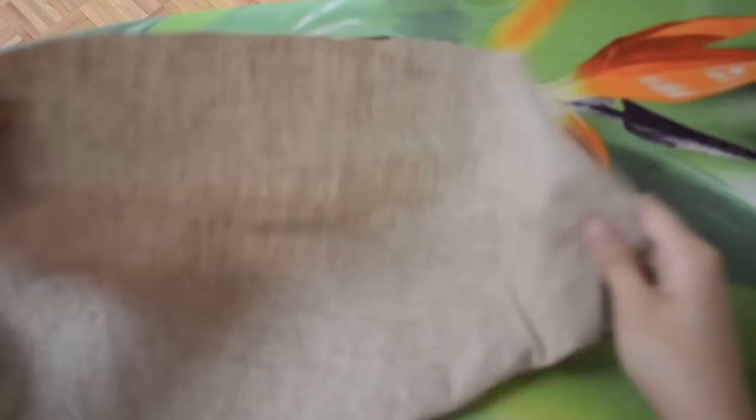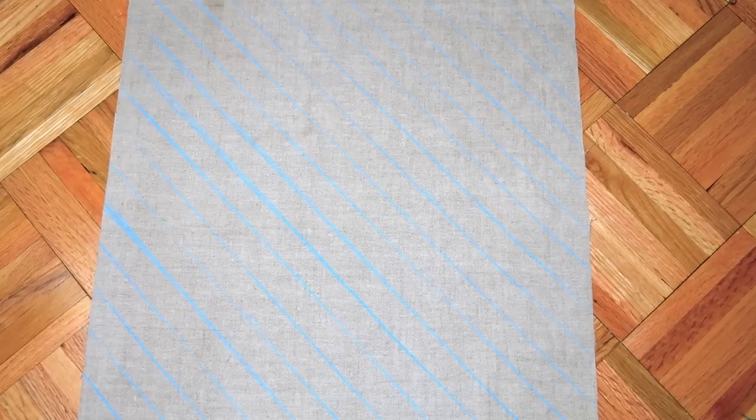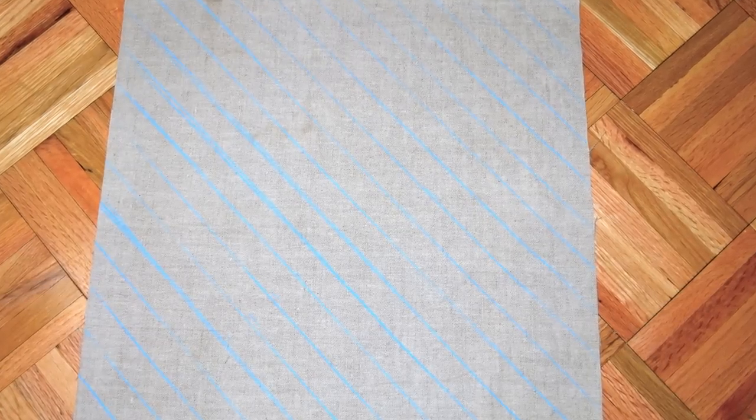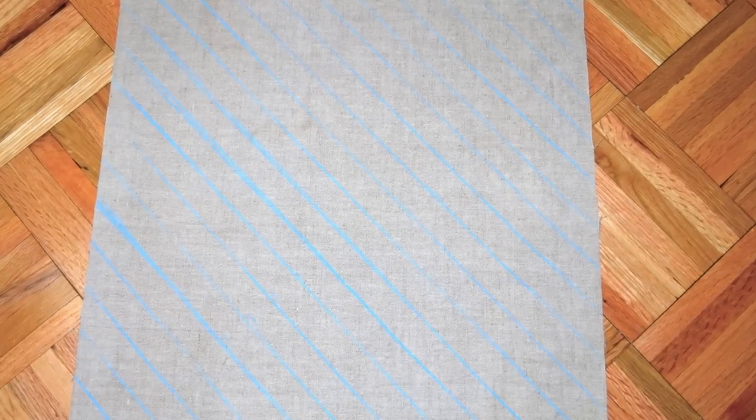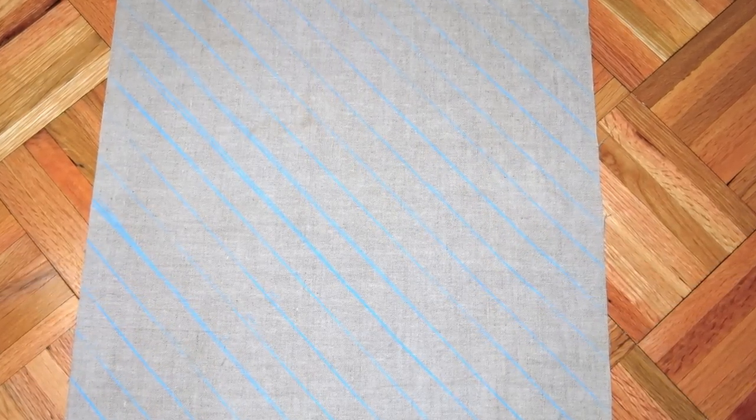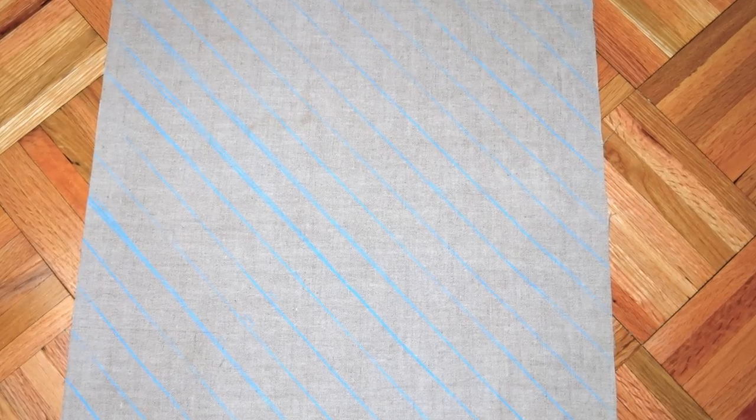I'm going to take the two front panels, put them right on top of each other. I will pin around to keep them together. And next, I'm going to mark diagonal lines one inch apart from each other. And it should look like this. Then I'll take it to my sewing machine and run a straight stitch on each of the lines that I marked.